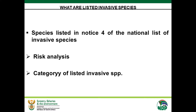The listing of species is not something that was thought of in one day. Species should be listed through a process of risk analysis, meaning they need to be thoroughly evaluated to determine whether they pose a potential risk of becoming invasive or not. After being assessed, they are categorized according to categories 1A, 1B, 2, and 3.